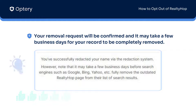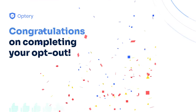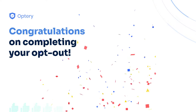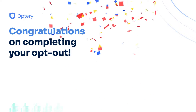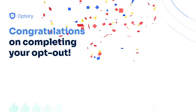If you need to remove multiple listings, just simply go through the process again for each record that you would like to remove. Congratulations for opting out of RealtyHop. You have taken a simple but important step towards reclaiming your privacy.